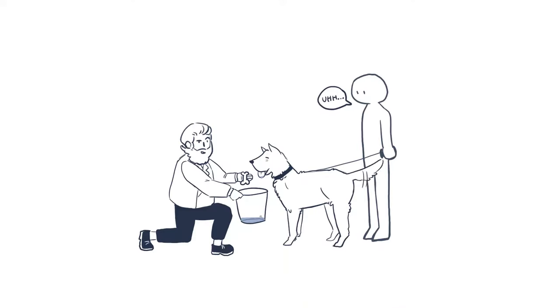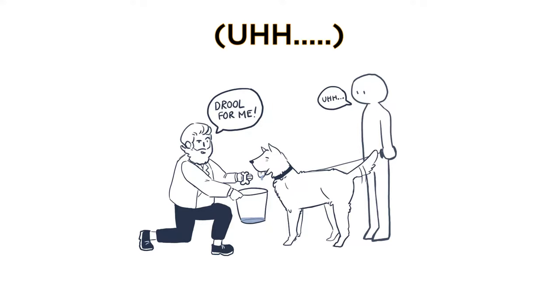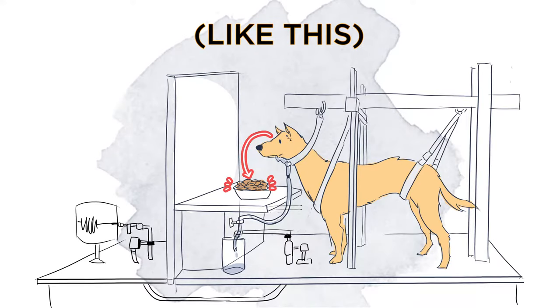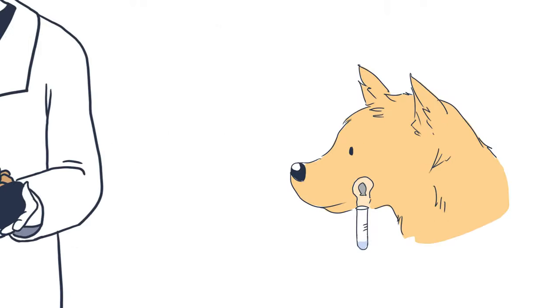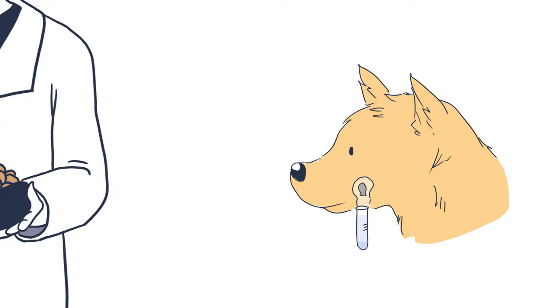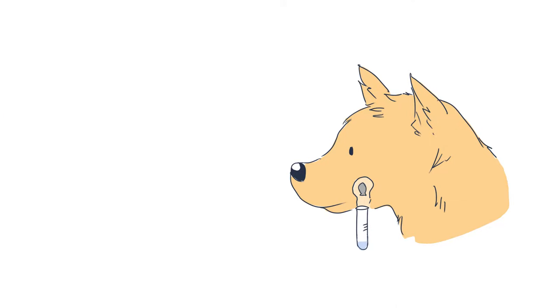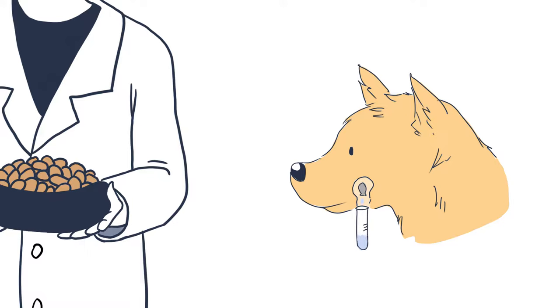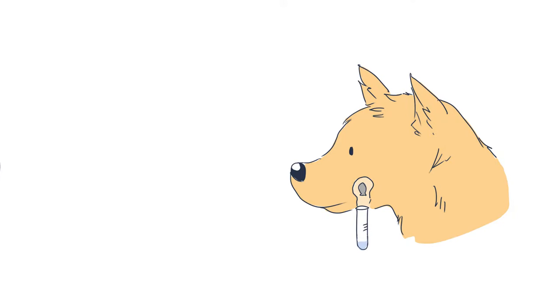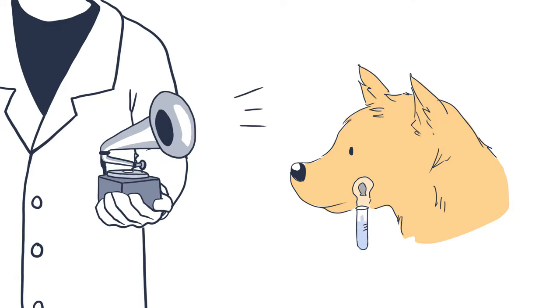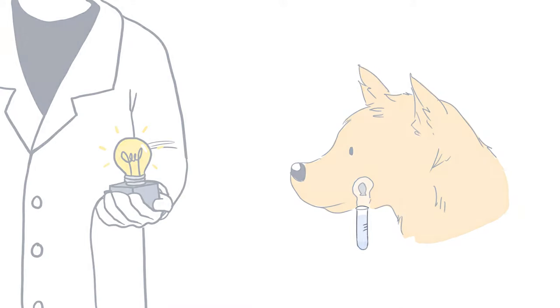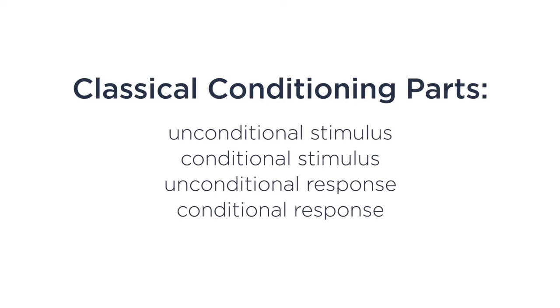Pavlov was collecting dog saliva when he discovered that dogs would salivate not only in response to food, but in response to things associated with food. In a series of experiments, Pavlov conditioned the dogs to salivate in response to neutral stimuli like a metronome, a tone, or a light bulb. From these experiments, we understand the process of classical conditioning to have the following parts, so let's unpack what these parts are by looking into Pavlov's experimental process.